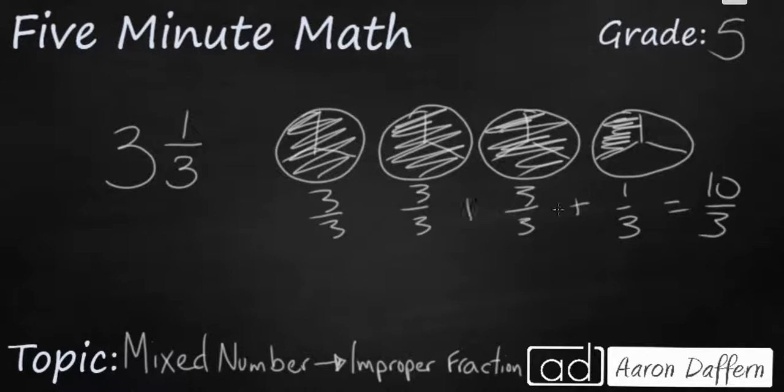Now how can you do this without drawing a picture? Well take a look at your whole number and your denominator. The whole number tells you how many wholes you have and the denominator tells you how many pieces each of those wholes are broken up into. So what you need to do is multiply your whole number times your denominator. 3 times 3.